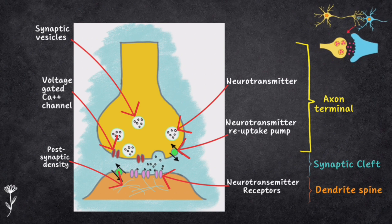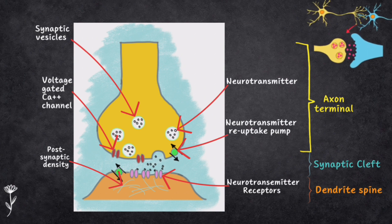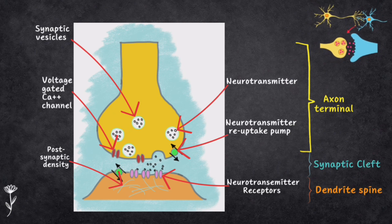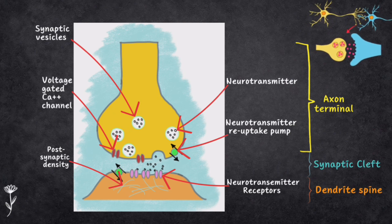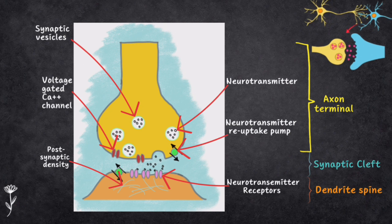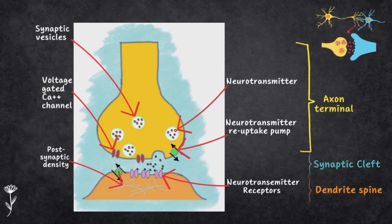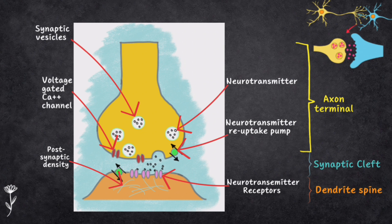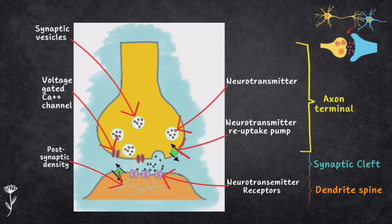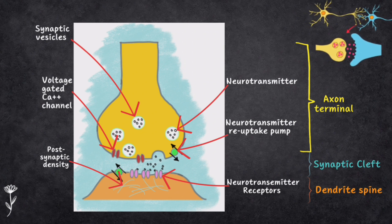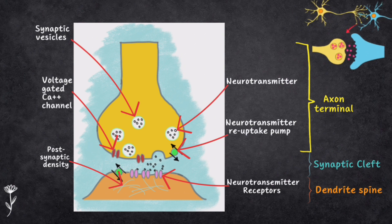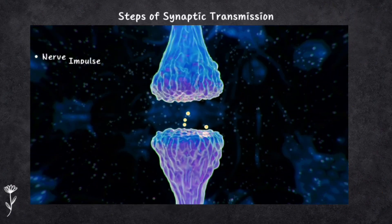The third part is the plasma membrane of the post-synaptic neuron. This is the membrane of the neuron where the information is going — certain receptors are present on this membrane where the neurotransmitter molecules come and attach themselves. So when one neuron wants to tell the other something, it sends neurotransmitters across the synaptic cleft to the other neuron's plasma membrane. That's how the message gets through — it's like passing notes in class, but with special chemicals.